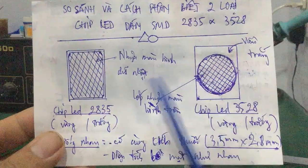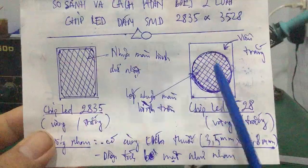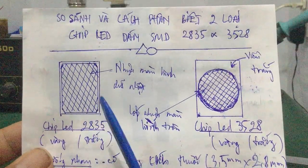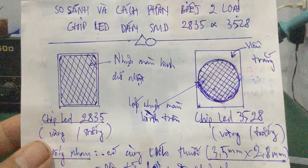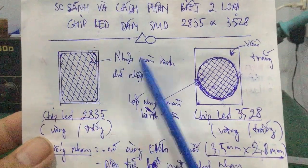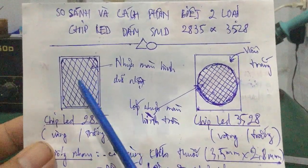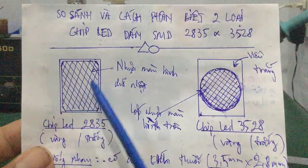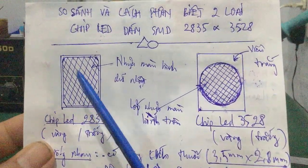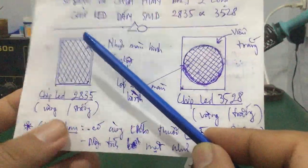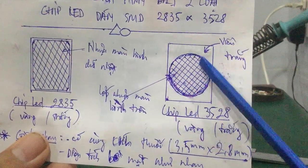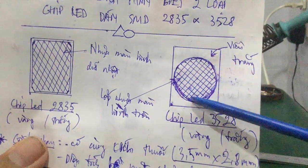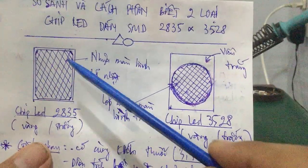Nhìn bên ngoài, 2 chip LED này có cùng kích thước và diện tích bề mặt hình chữ nhật - trông giống nhau. Nhiều bạn không biết, cứ nhầm lẫn giữa 3528 và 2835. Thứ nhất, các bạn nhìn lớp nhựa màu bên ngoài - thường là màu vàng hoặc trắng. Đối với chip LED 2835, lớp nhựa bên ngoài có hình chữ nhật. Còn đối với chip LED 3528, hai bên rìa ngoài có viền màu trắng, và lớp nhựa màu bên trong chỉ là hình tròn - không phải hình chữ nhật.